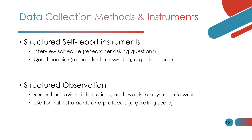It could be a five-point or three-point Likert scale. Another method is structured observation, where you record behaviors, interactions, and events in a systematic way. This requires a formal instrumented protocol such as a rating scale, so that when you observe something you can rate it accordingly and maintain objectivity in your data collection.